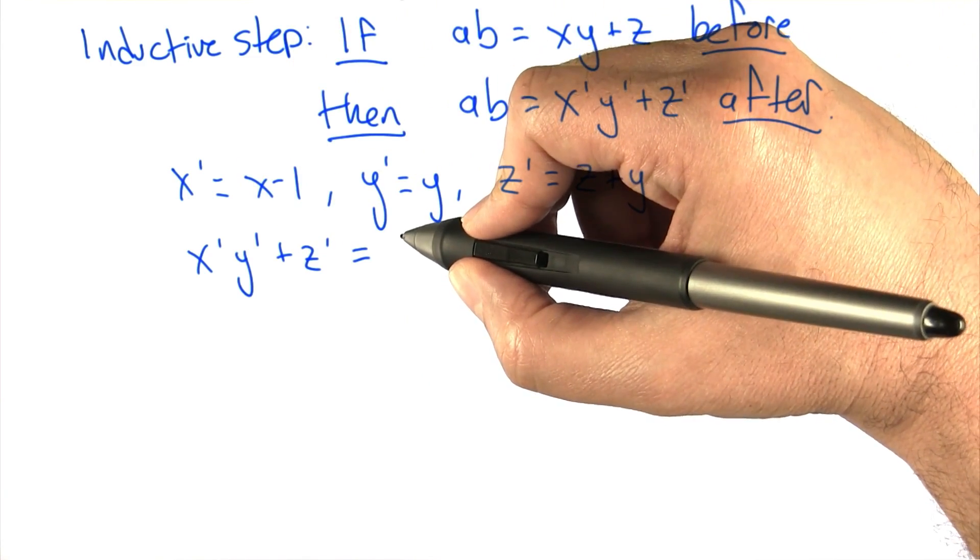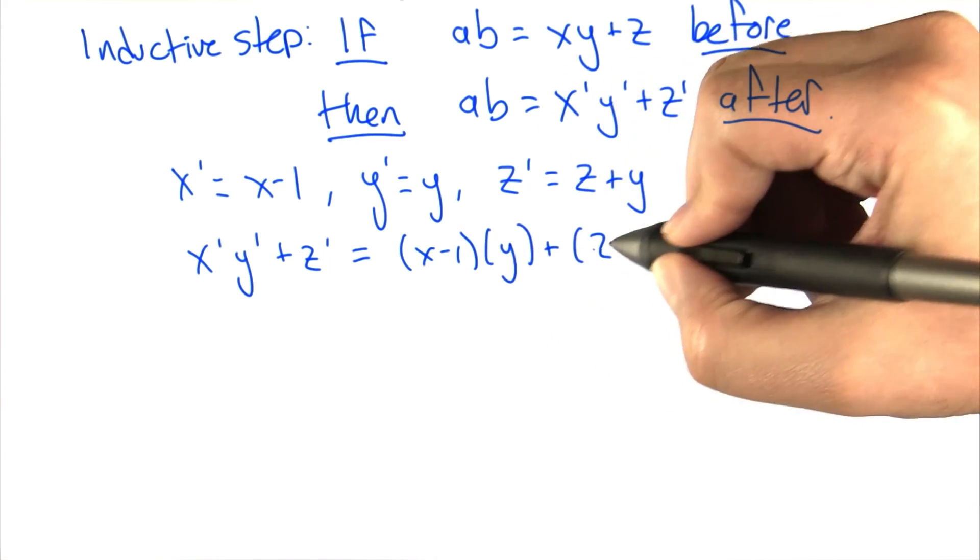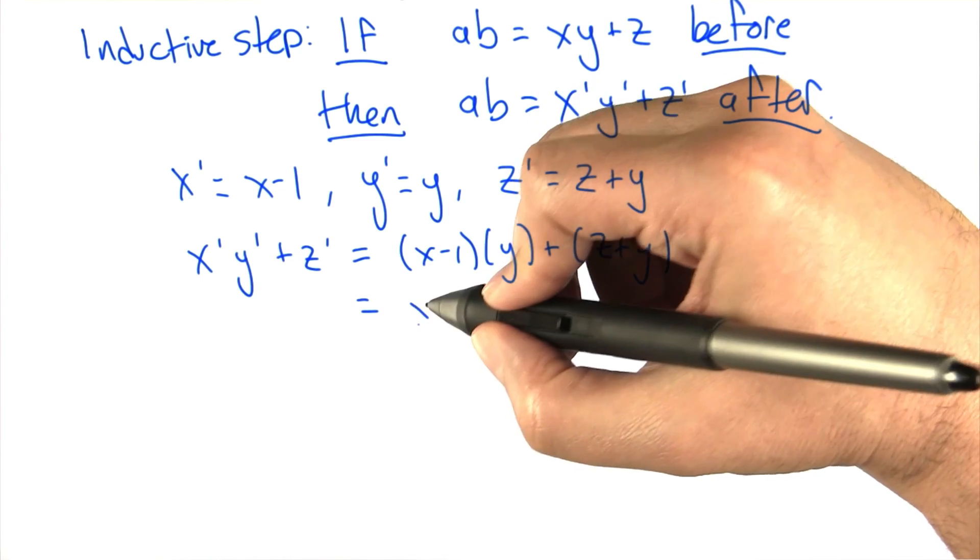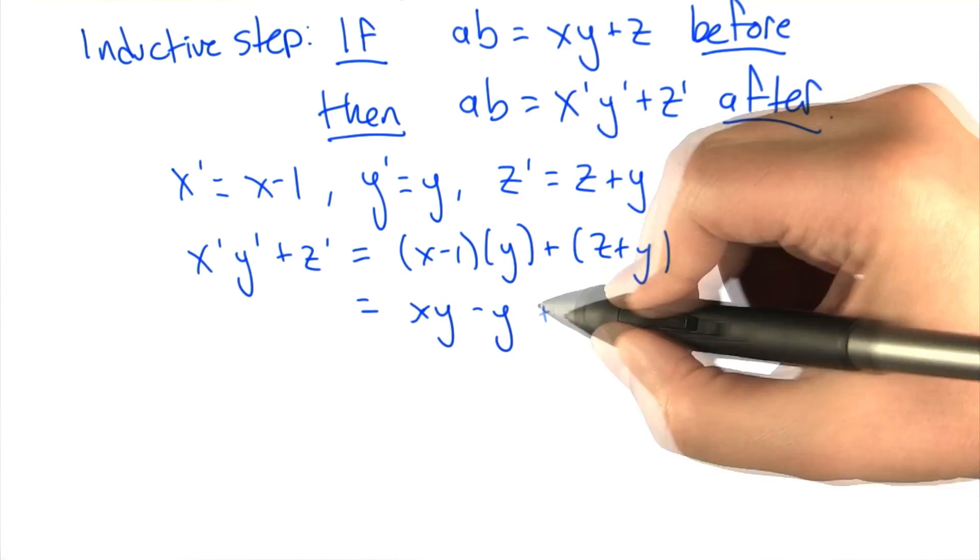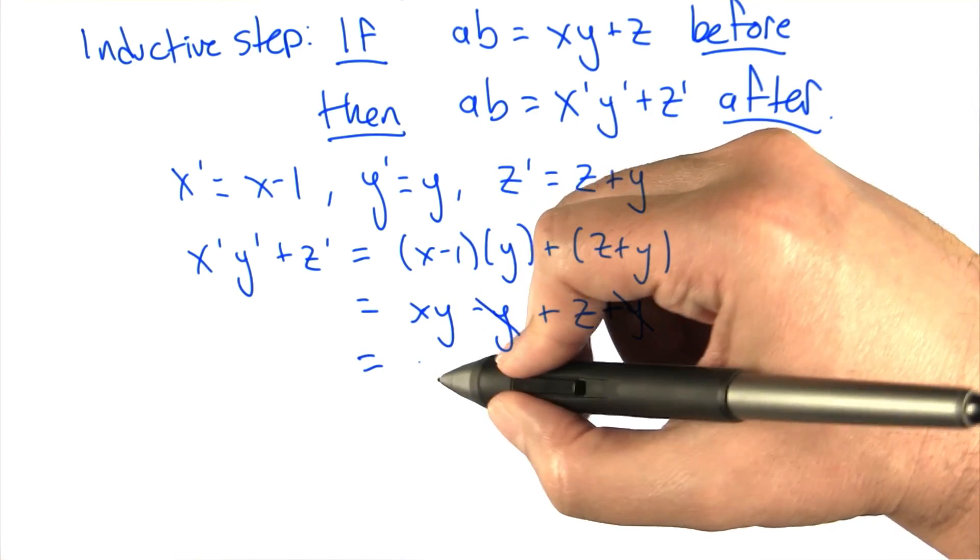and Z prime are, so let's substitute those in. That's X minus 1 times Y plus Z plus Y, and now we'll just do a little bit of algebra. Multiplying this out, we get XY minus Y plus Z plus Y, and these Y's plus Y and minus Y cancel, and so we get XY plus Z.